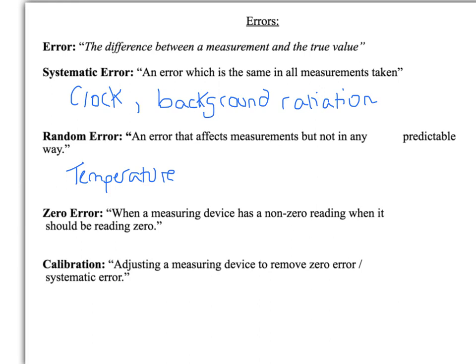A few other key words you need to know when we're talking about errors: zero error is when a measuring device gives a non-zero reading when it should be reading zero. For instance, if you are measuring the current in a circuit and your circuit was open so it wasn't fully connected, in theory you should be reading zero amps but maybe your measuring device read one milliamp or two milliamps. That's a zero error.